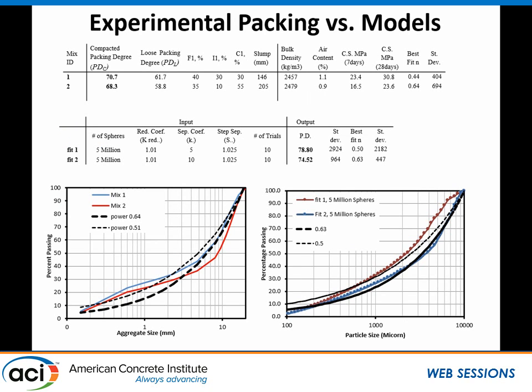Comparing fit 1 and fit 2 produced with the virtual packing algorithm using 5 million particles, you get 78% and 74% packing as output. Comparing those to real-world mixtures with 40% and 35% fine aggregate, you get 70% and 68% in the lab. Comparing to the power curve, fit 1 and fit 2 give best-fit exponents of 0.5 and 0.63, versus 0.44 and 0.64 from the experiment. This also tells you the best-fit power curve exponent for the lowest standard deviation.